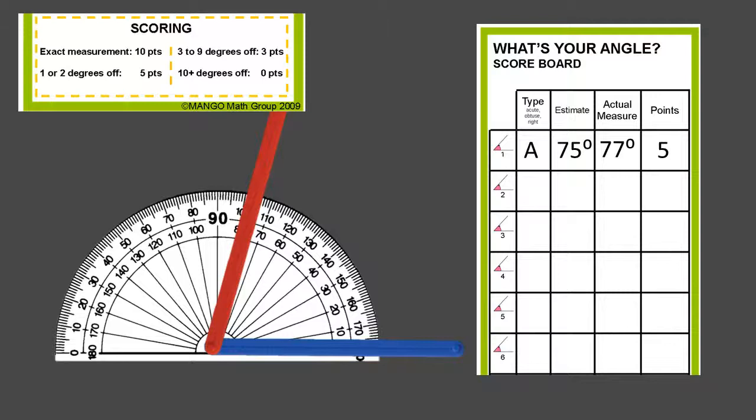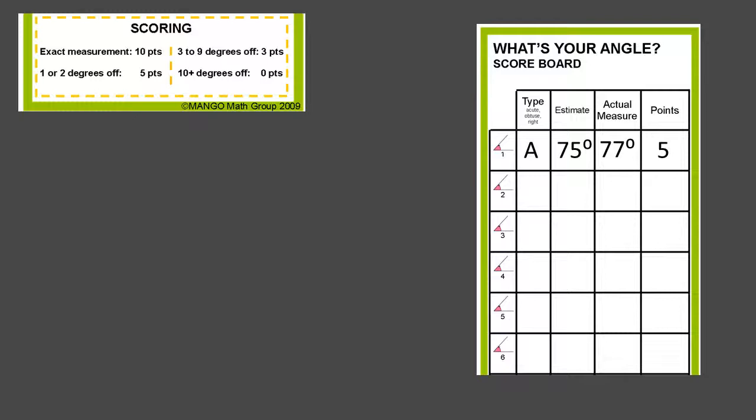The students are going to continue having one student make an angle with the angle legs. The other students then guess the type of angle. In this case it's obtuse. Estimating the size of the angle, at first they're just going to be doing wild guesses. They should get more accurate as they go. They're going to say 120 degrees.